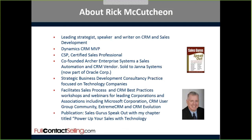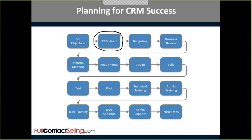Today we're going through the step-by-step process of laying out a Salesforce automation project. Here's the process: step one, set your objectives; step two, put your CRM team together; step three, budgeting; four, business review; five, process mapping; then requirement design, build, test, pilot, technical training, admin training, user training, user adoption, admin support, and next steps. This may sound complicated, but it's not. Laying it out like this gives us a step-by-step process and allows us to say where we are and what we need to do next.